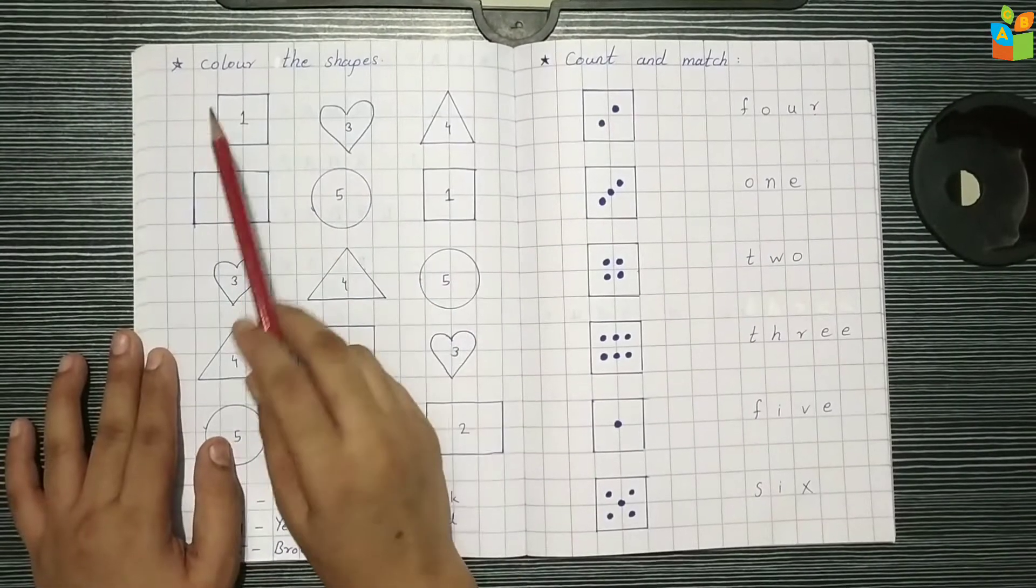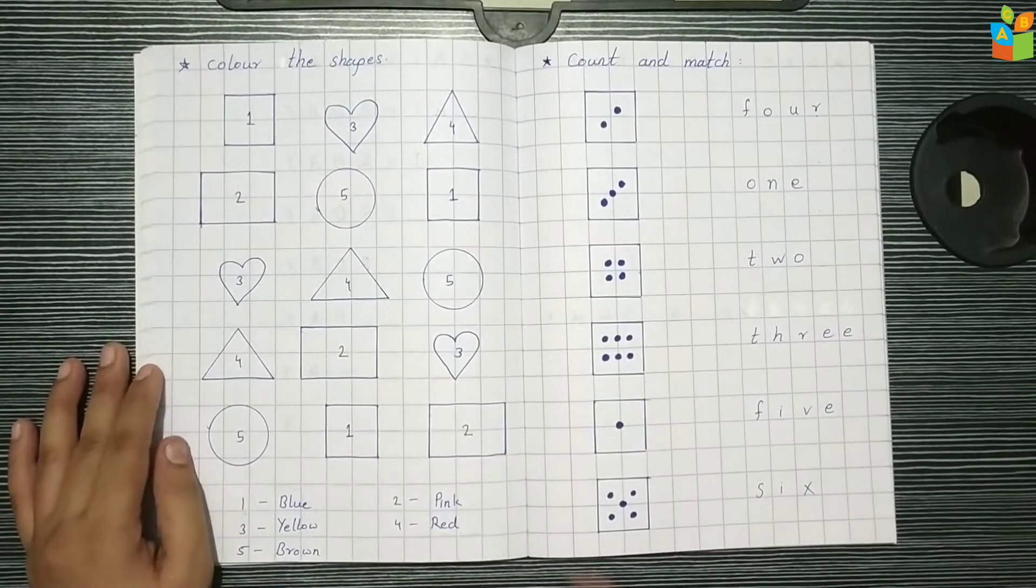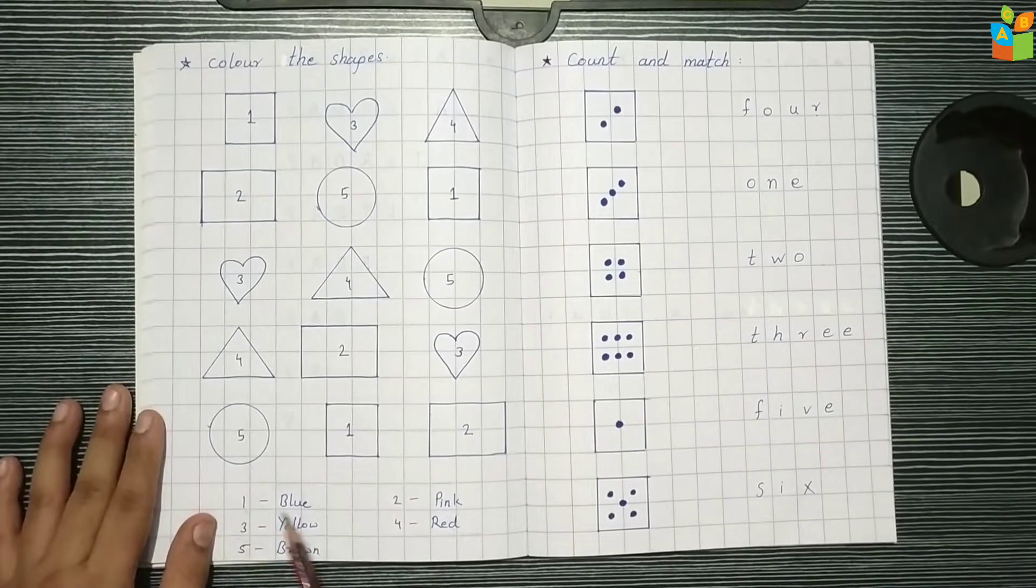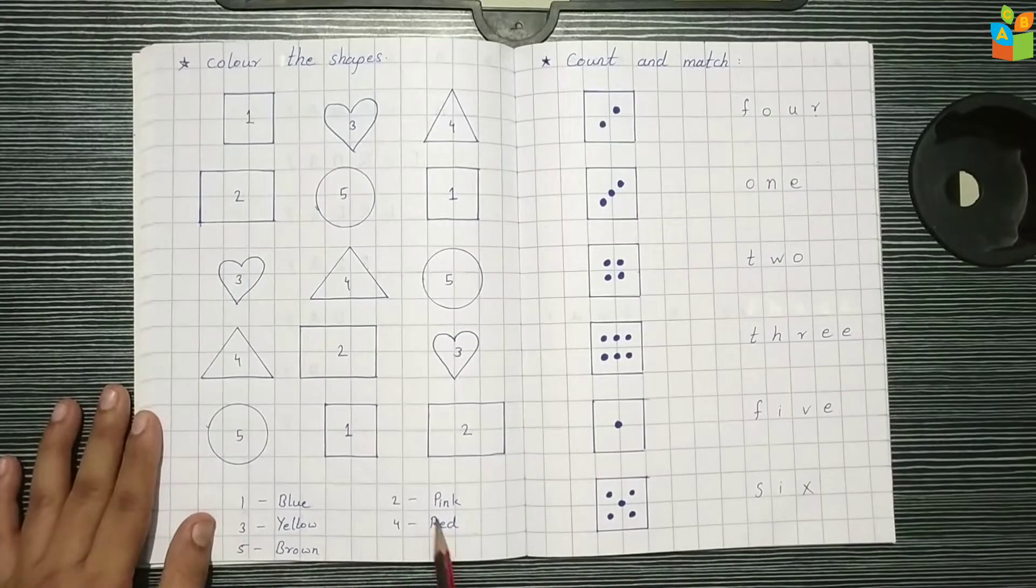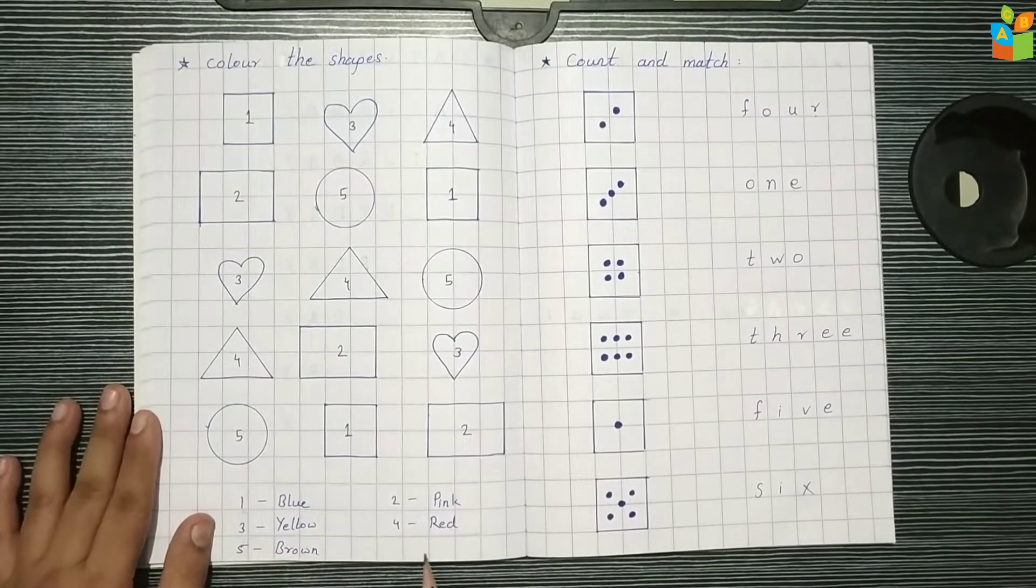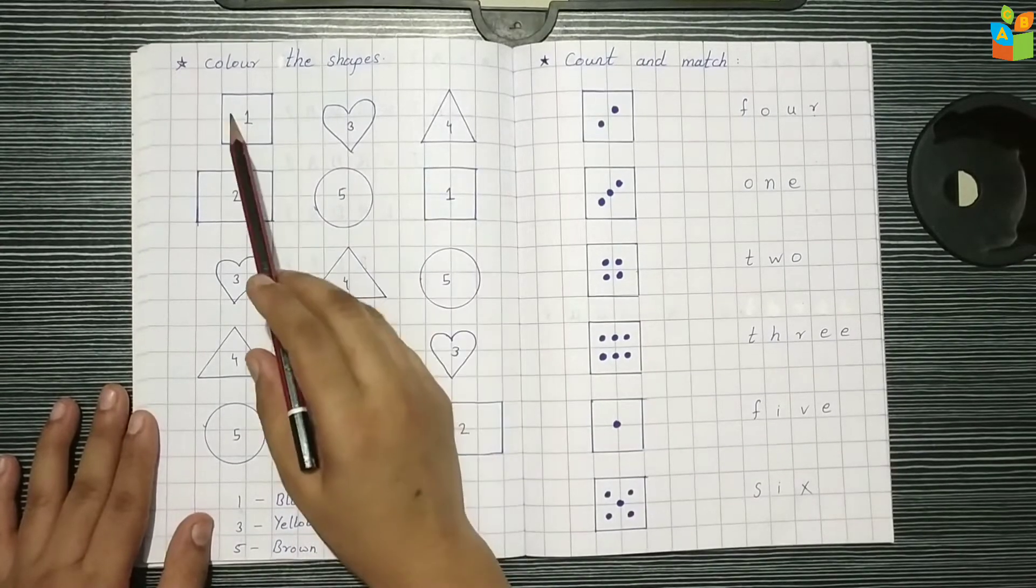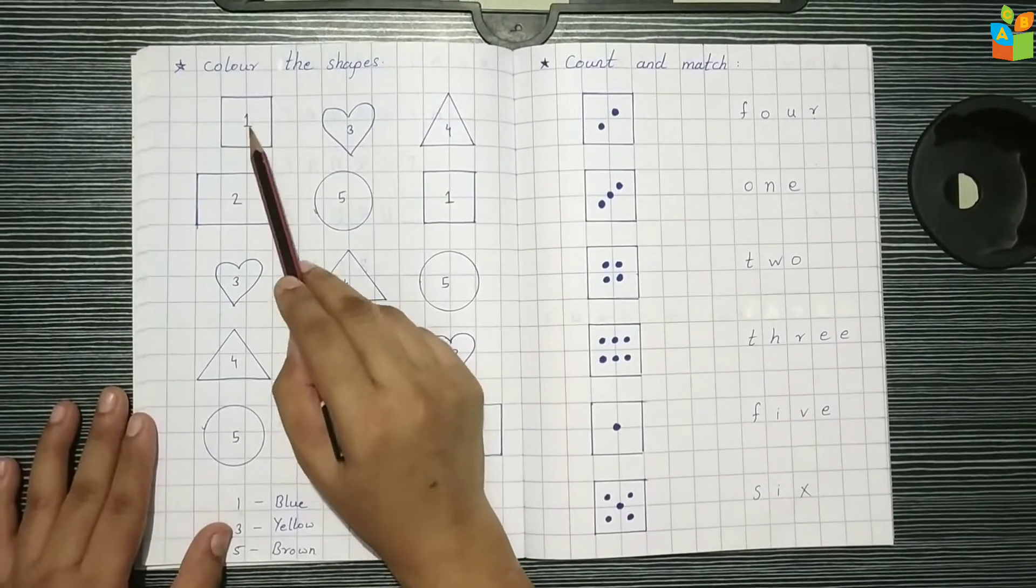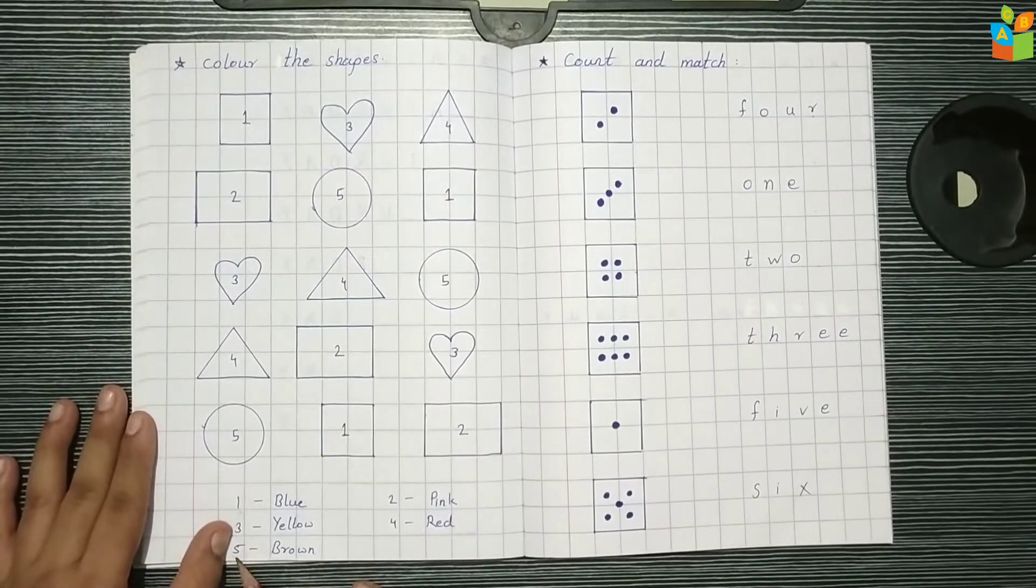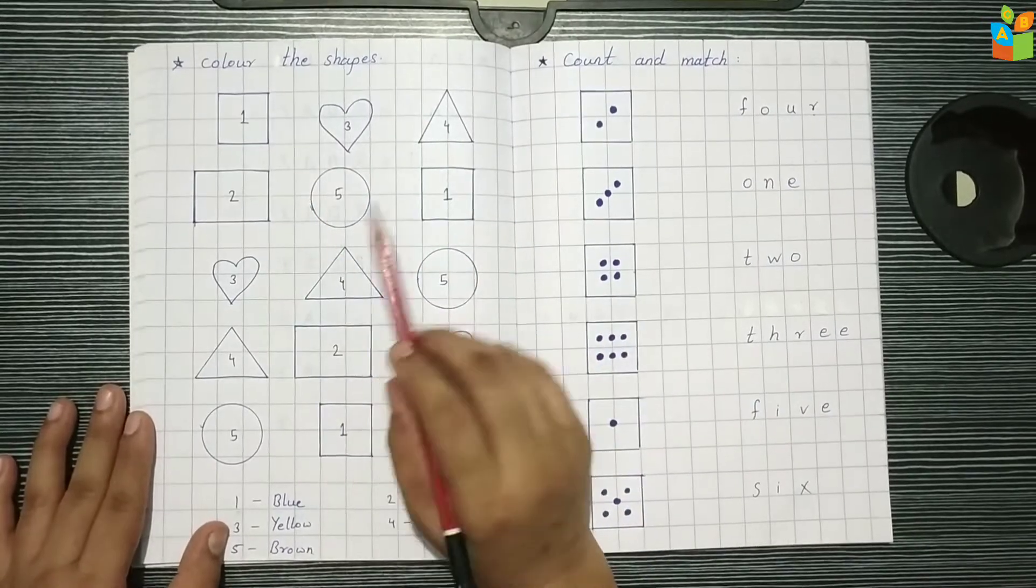Next is colored shapes. I have written here some shapes and there are numbers. I have written here like 1 blue, 2 pink, 3 yellow, 4 red, 5 brown. So the child has to know that 1 here is blue, then color blue. Like 5 brown, so find 5 and brown.